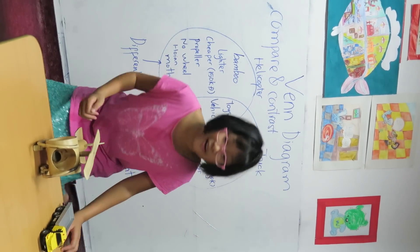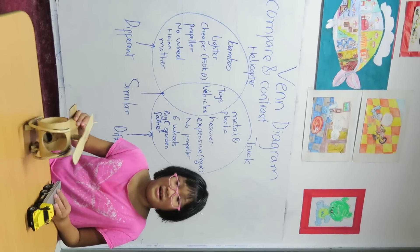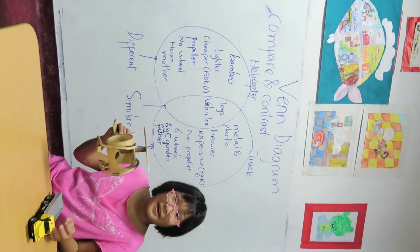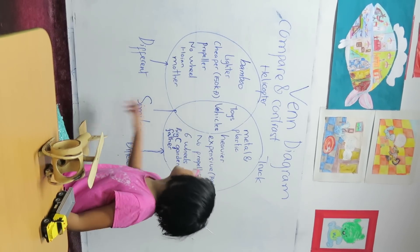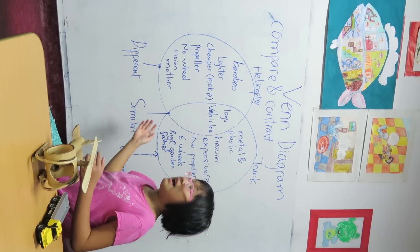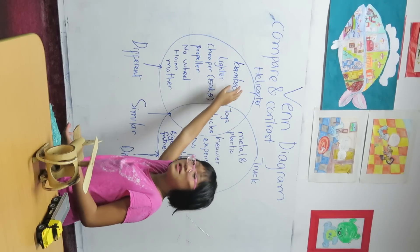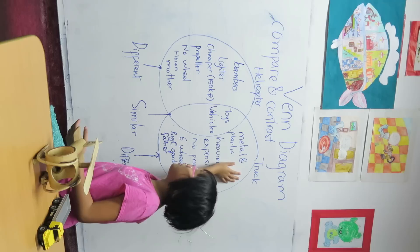So, for example, I would like to compare and contrast this helicopter with this truck. The first thing is I'm going to draw two circles and then I label the circles. So this circle is for the helicopter and this circle is for the truck.